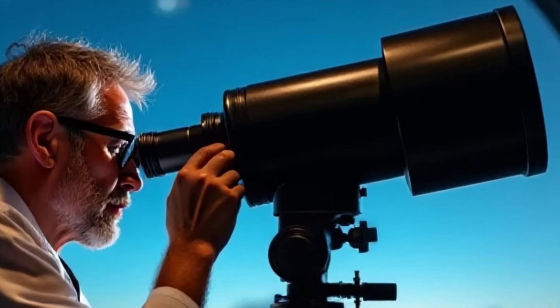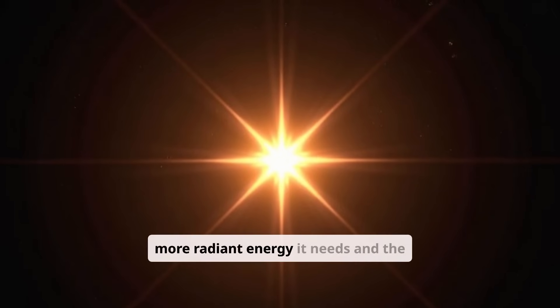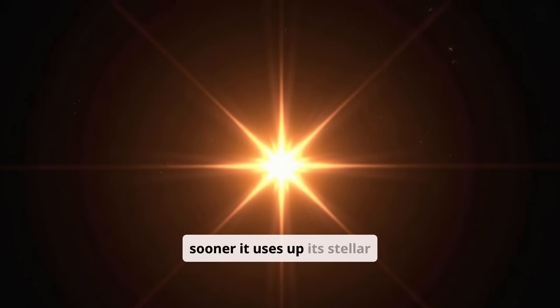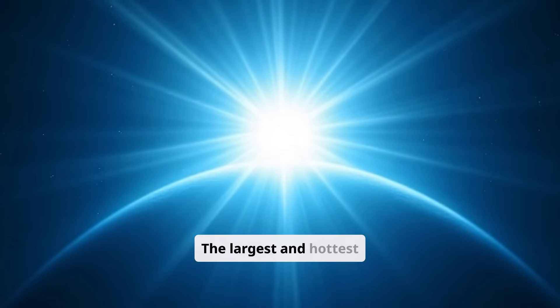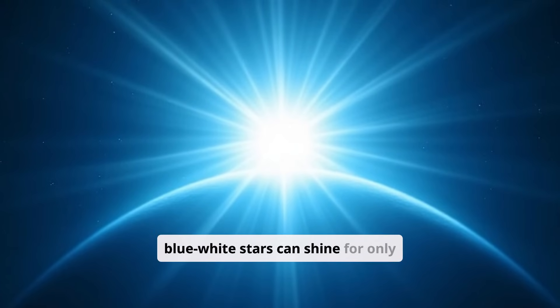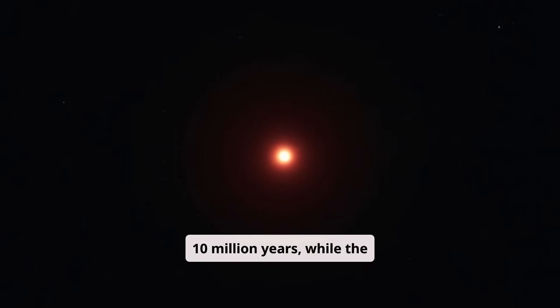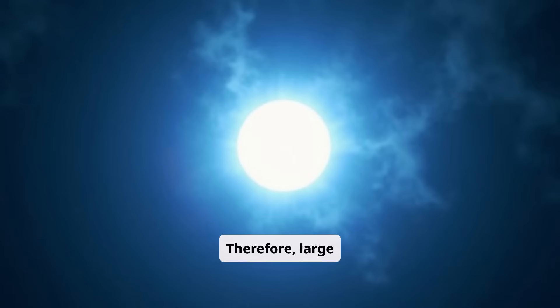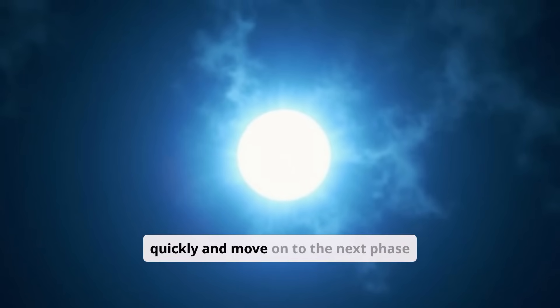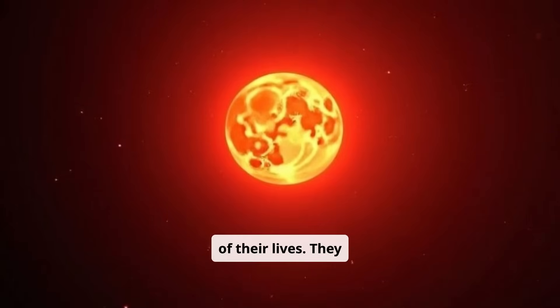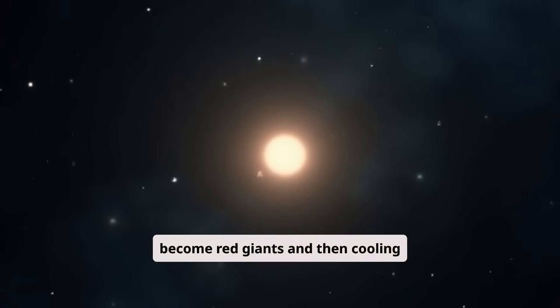One clue is size. The larger a star, the more radiant energy it needs and the sooner it uses up its stellar fuel. The largest and hottest blue-white stars can shine for only 10 million years, while the smallest and coolest reddish ones can live actively for as long as 50 billion years. Therefore, large blue-white stars never age because they exhaust themselves very quickly and move on to the next phase of their lives. They become red giants and then cooling white dwarfs.